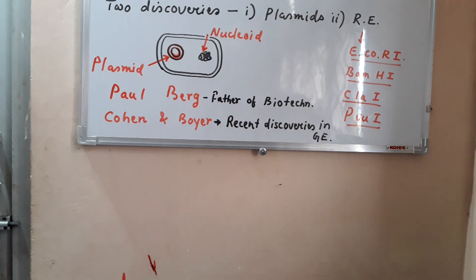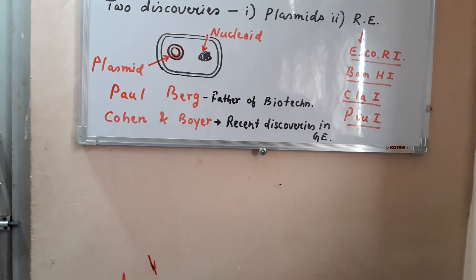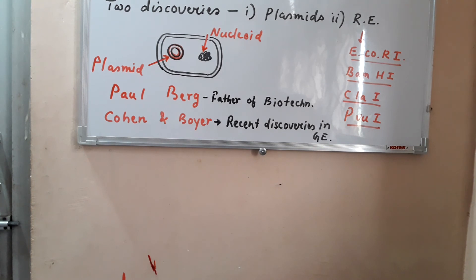For example, BamHI is obtained from Bacillus amyloliquefaciens, strain H, and it was the first enzyme discovered from that strain. ClaI comes from Caryophanon latum. PvuI comes from Proteus vulgaris, and PstI comes from Providencia stuartii. These are examples of how restriction endonucleases are named from their source organisms.